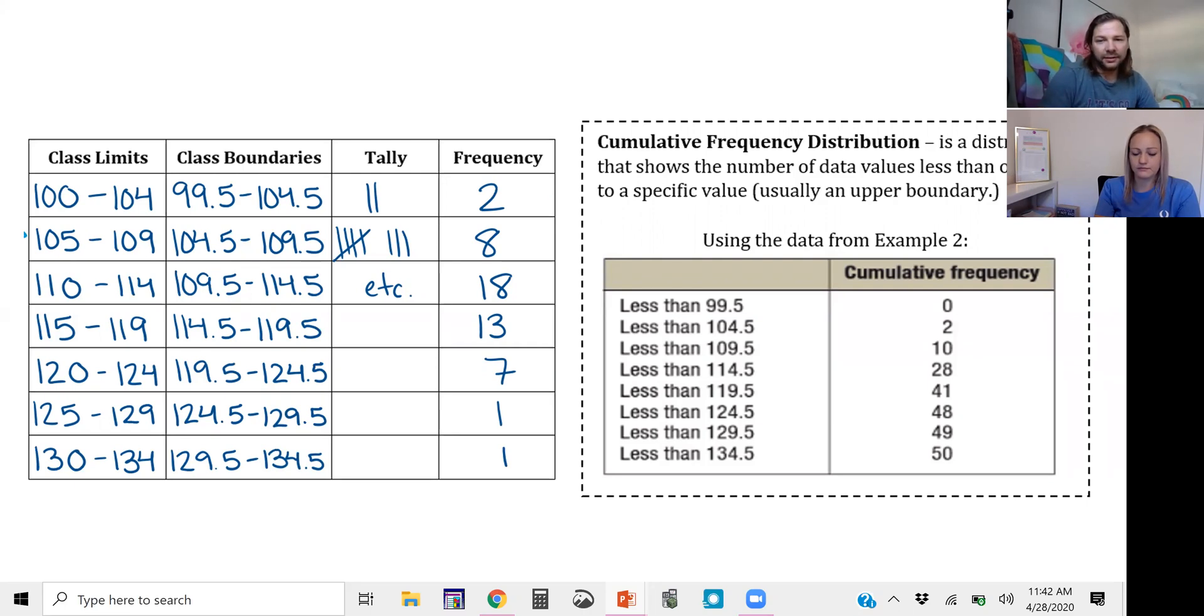For example, in this example here we can look at all the number of data points that were less than 99.5. Well, there were none because the smallest values are between 99.5 and 104.5, so we have a zero there. Then how many are less than the next lower bound, which is 104.5? Well, the two that were in the previous class.